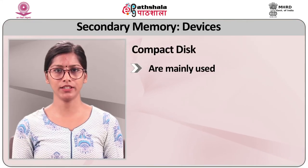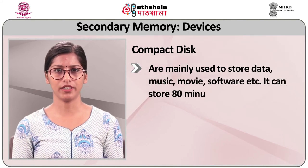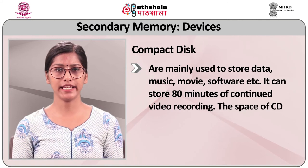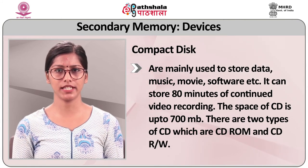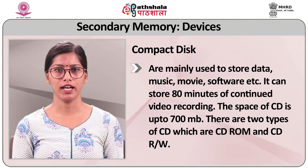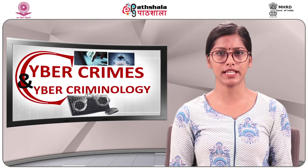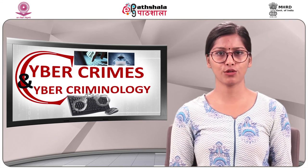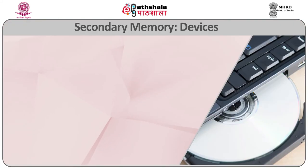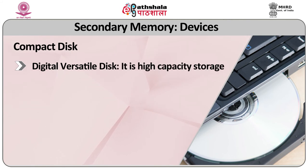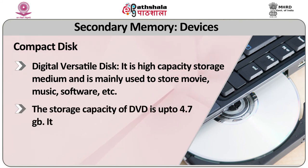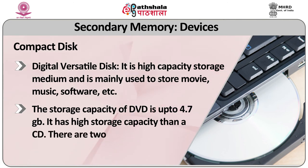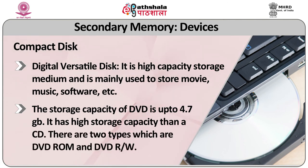Compact disks (CDs) are mainly used to store data, music, movies, and software. A CD can store up to 80 minutes of continuous video recording and has a storage space of up to 700 MB. There are two types: CD-ROM and CD-RW. CD-ROM is used to store computer data for PC games and other applications. DVD stands for Digital Versatile Disk. It is a high-capacity storage medium mainly used to store movies, music, and software. The storage capacity of a DVD is up to 4.7 GB, with higher capacity than a CD. There are two types: DVD-ROM and DVD-RW.